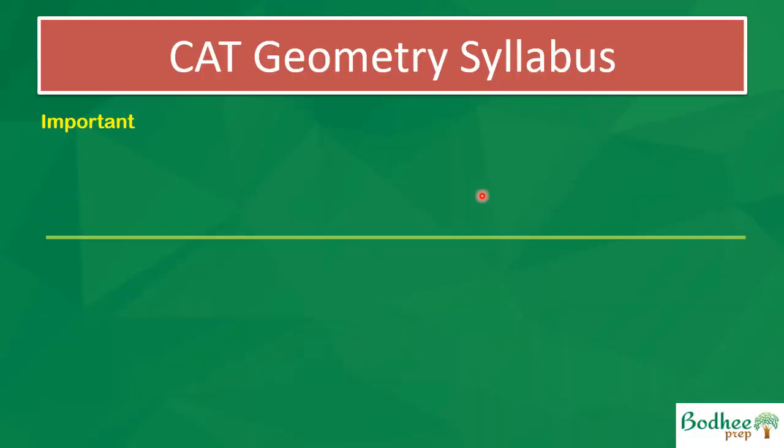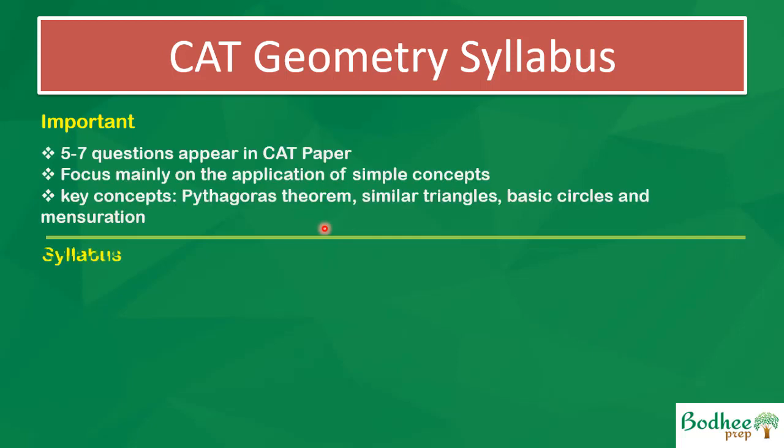In this video we are going to focus on the CAD geometry syllabus and some important things in geometry to keep in mind. The first important point is that five to seven questions appear in the CAD paper from geometry — almost 20% of the questions can come from CAD geometry. Sometimes you might see more than five or six questions from geometry, so geometry is a very important component of the CAD quant section after arithmetic and algebra.